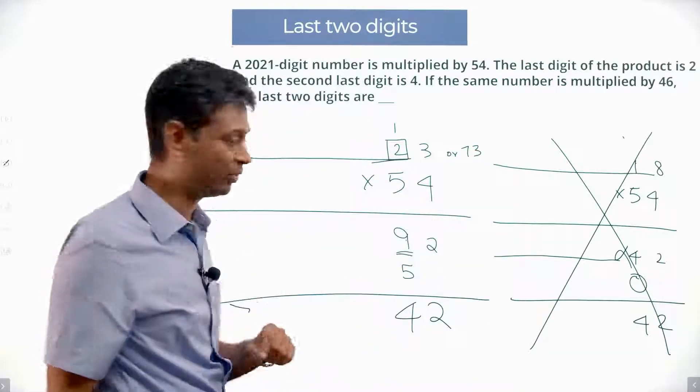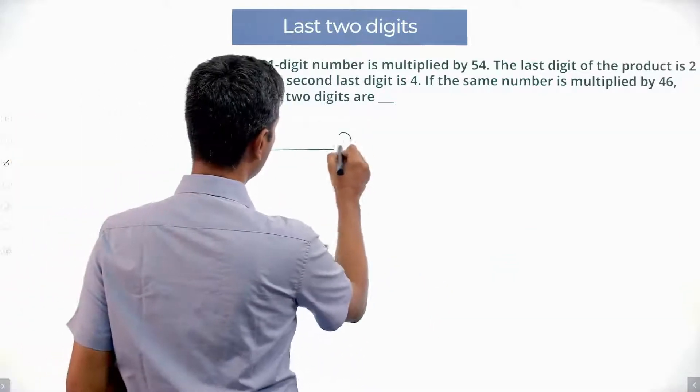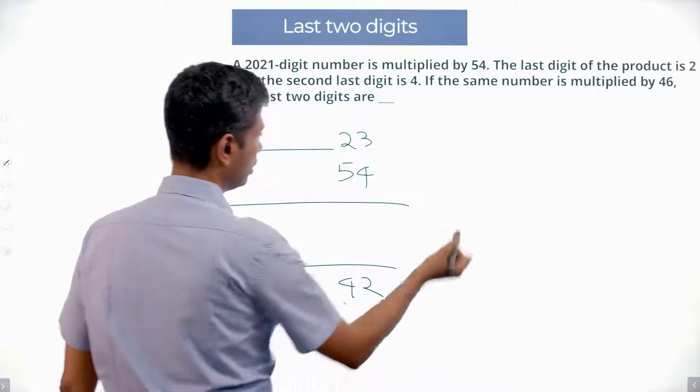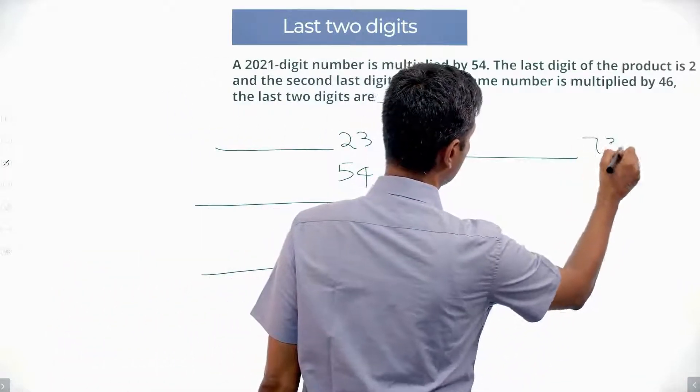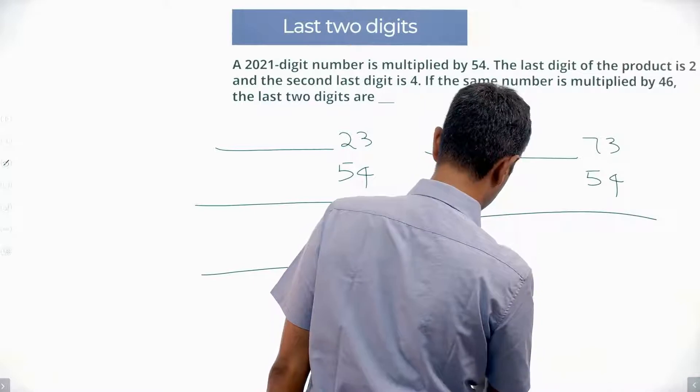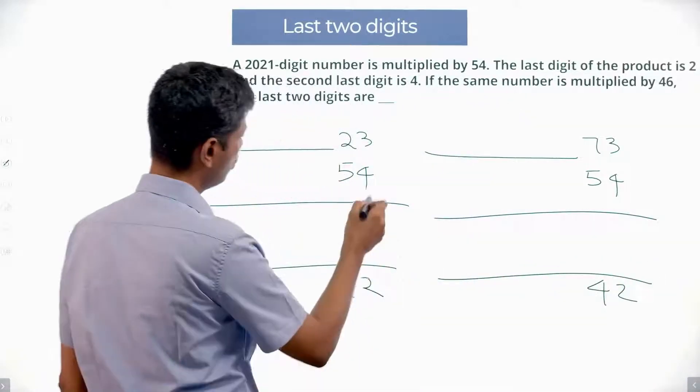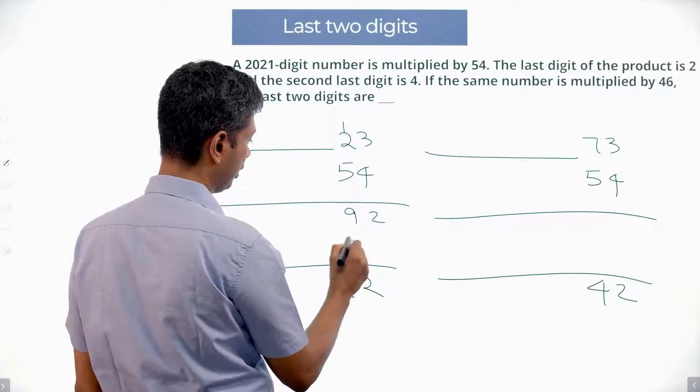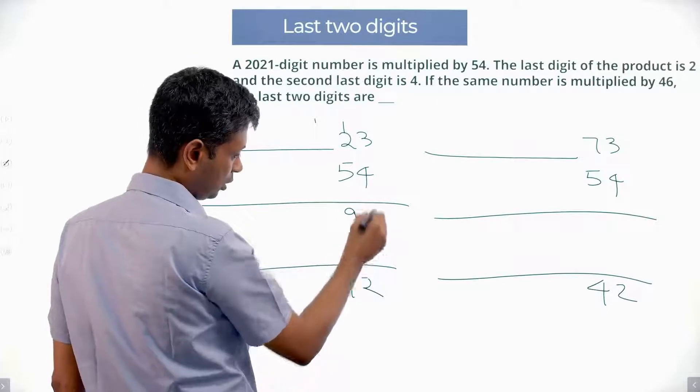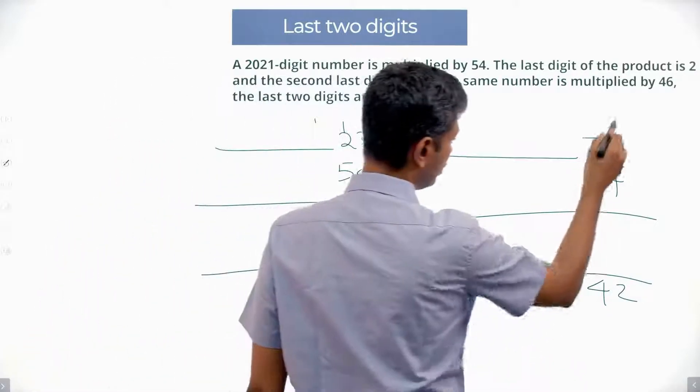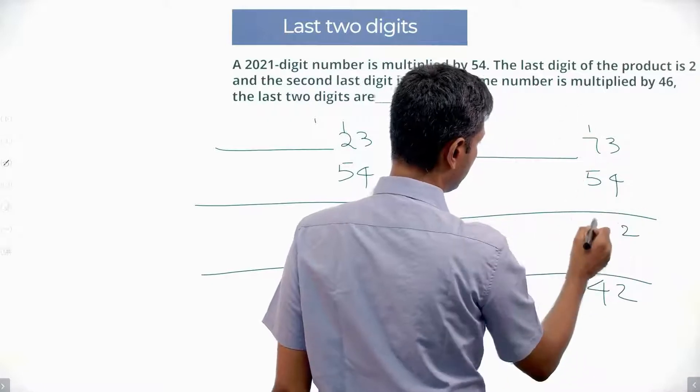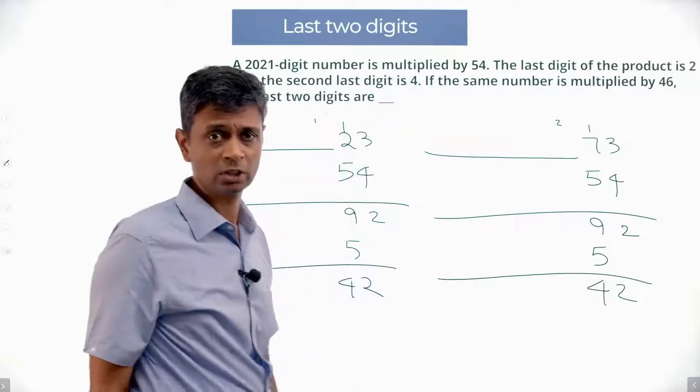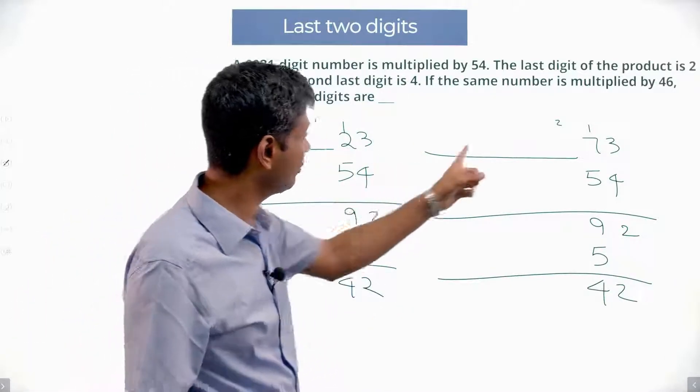Now we are getting somewhere. So if my last 2 digits were 23, I multiply by 54, my last 2 digits will be 42. If my last 2 digits were 73, I multiply by 54, my last 2 digits will be 42. 4 into 3, 12, 2, 1. 4 into 8, 8 plus 1, 9. 5 into 3, 15. 5, 1 carried over. 2, 14. Works. 4 into 3, 12, 2, 1 carried over. 28 plus 1, 29. 9, 2 carried over. 5 into 3, 15. 5. Works. So my last 2 digits could be 23 or 73.